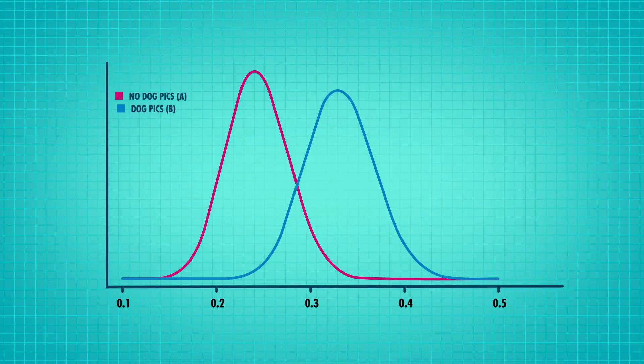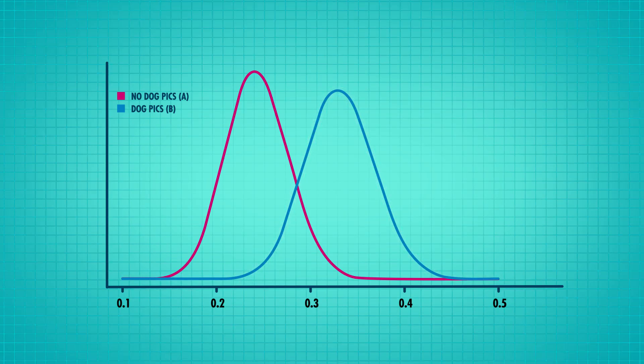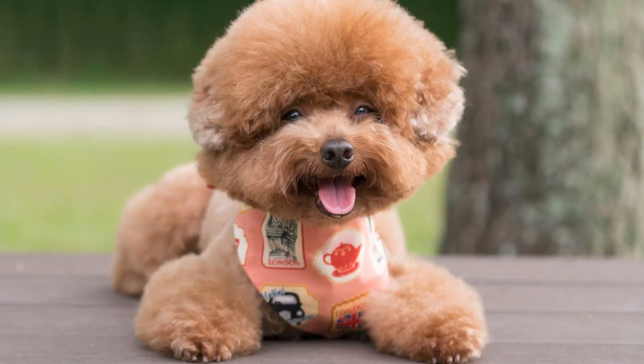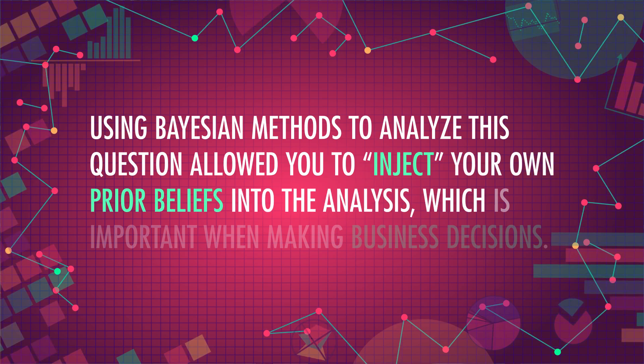Since the two groups were the same before you assigned them to get either email — no dog pictures or with dog pictures — you use the same prior for both groups. Once you've incorporated this new evidence, your posterior distributions look like this, and they tell you how likely each click rate is under your new posterior beliefs about each group. It looks like the group with pictures is likely to have a higher click rate, but you can't know for sure. One way to get more information is to randomly simulate a bunch of samples, one at a time. The samples come from each of your two posterior distributions, and then you count how often the group with pictures' click rate is higher than the group that didn't get a picture in their email. That percentage will tell you roughly how likely it is that the group with pictures will have a higher click rate. You decide that if in 70% of your simulation samples the group with pictures has a higher click rate, you'll include glamour shots of Ginger in all your new emails. Using Bayesian methods to analyze this question allowed you to inject your own prior beliefs into the analysis, which is important when making business decisions.